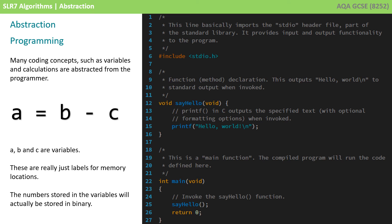When we actually write our code for our satellite navigation device, we will probably be including some variables and calculations, and these are abstracted from the programmer. In this example, A equals B minus C. A, B, and C are variables, but these are really just labels for memory locations. The numbers stored in the variables will actually be stored in binary, and we don't really know how this calculation is actually being performed by the arithmetic logic unit. The complexity of the computer system is being abstracted to the programmer.